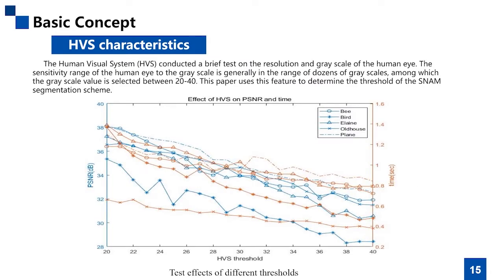The human visual system (HVS) was tested briefly on resolution and grayscale sensitivity of the human eye. The sensitivity range of the human eye to grayscale is generally within dozens of grayscales, with the grayscale value selected between 20 to 40. The article uses this feature to determine the threshold of the SNAME segmentation scheme. Testing on 5 images shows that when the threshold is around 30, the encoding time and PSNR value are the best. Therefore, the optimal threshold range is set around 30.